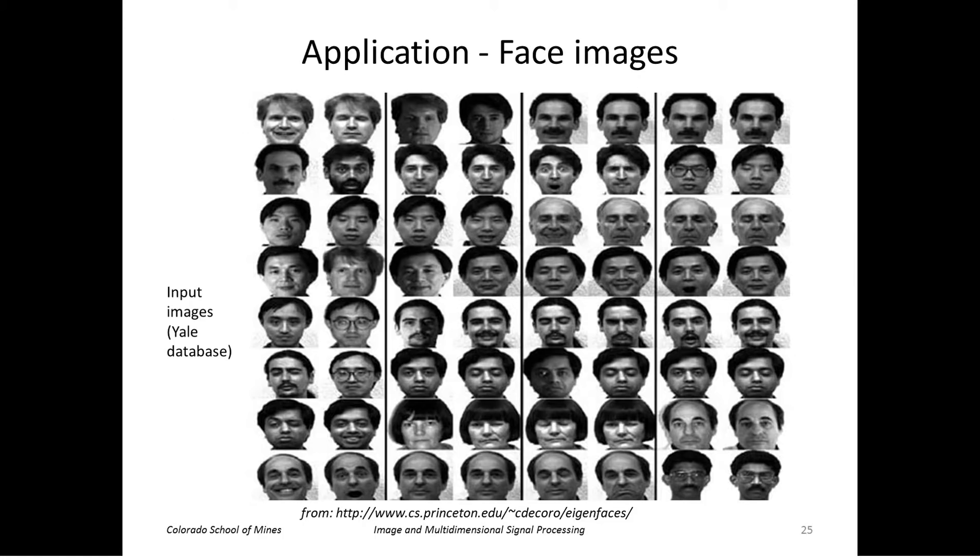Here's an example of using that on a collection of face images. So each image in this set we have transformed to a vector, and as you can see there's a number of people here, different views of the same person, but a number of different people as well.